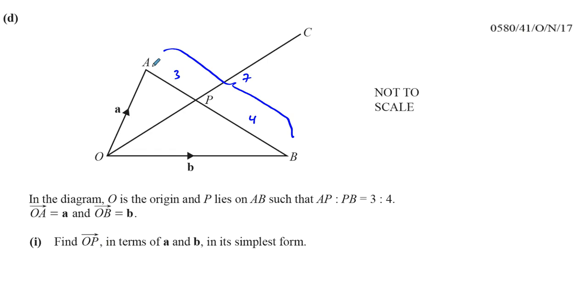So A to P is 3 parts out of 7. So we want to find the vector from O to P. So I'll write it up here, so you can see what's going on. So O to P, if I want to go from O to P, I've got to go from a route that I know, so I can go from O to A. And then I can go from A to P, which is part of a route that I can find out, because I can find out what A to B is, and A to P is part of it.